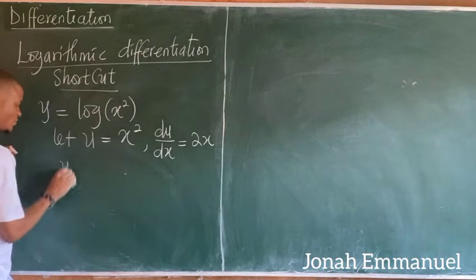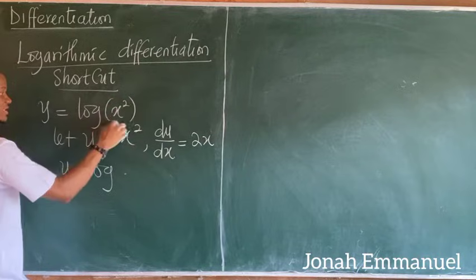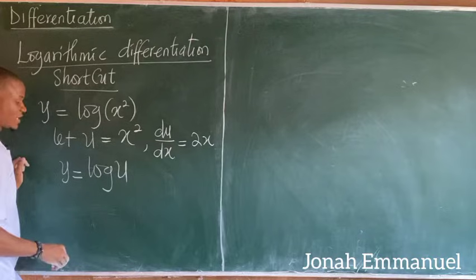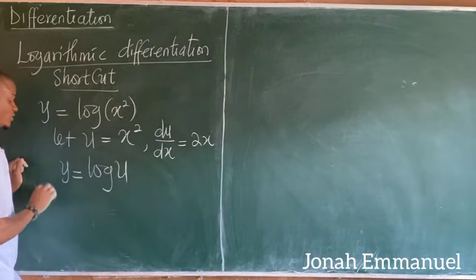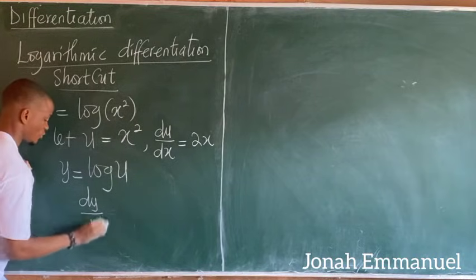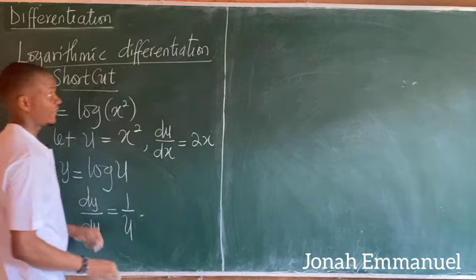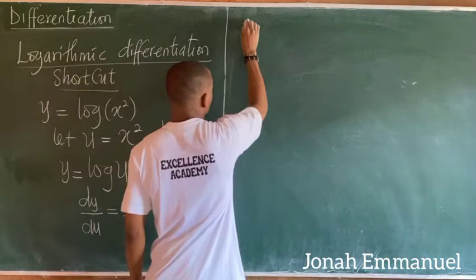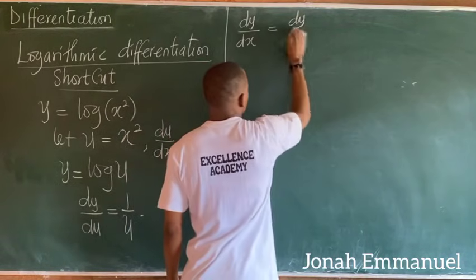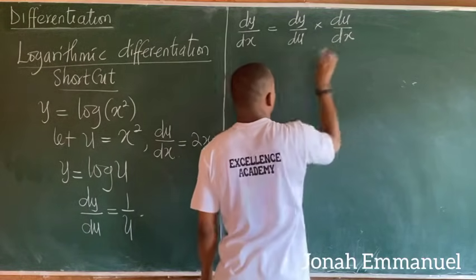Next, let y be equal to log of u. Differentiating y with respect to u gives dy over du equal to 1 over u. Using the chain rule, dy over dx equals dy over du times du over dx.